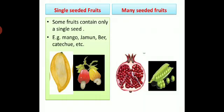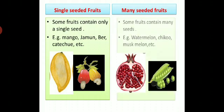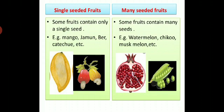Single seeded fruits and many seeded fruits. Single seeded fruits: students, you know some fruits contain only a single seed. For example, fruits like mango, jamun, pear, cashew, etc. Many seeded fruits: some fruits contain many seeds. For example, watermelon, chiku, muskmelon, pomegranate, pea, etc.